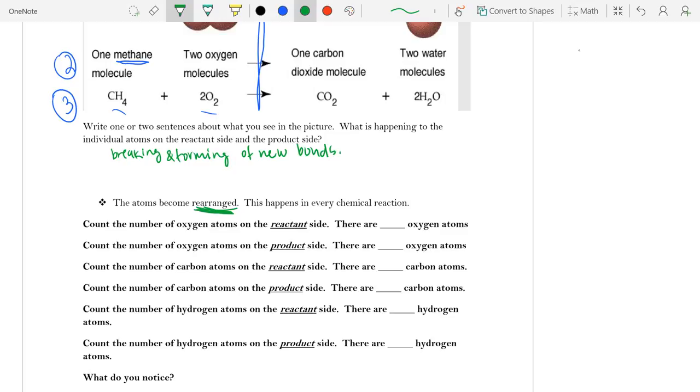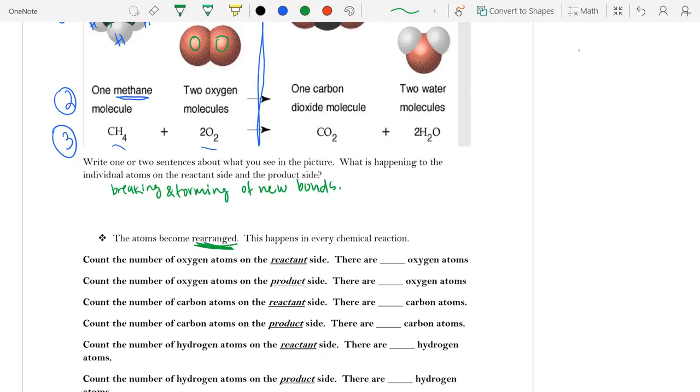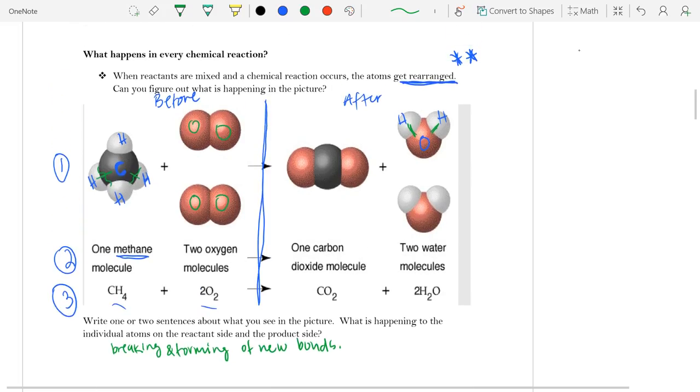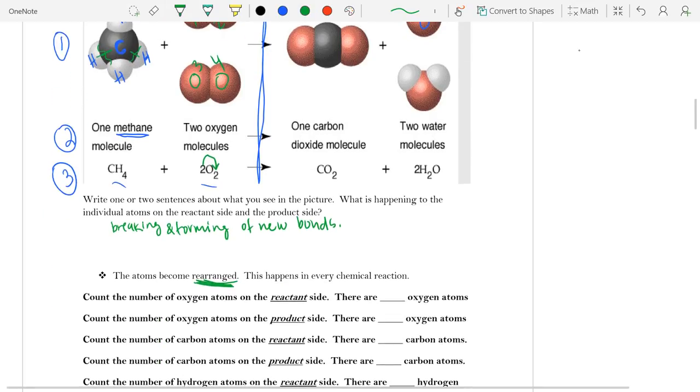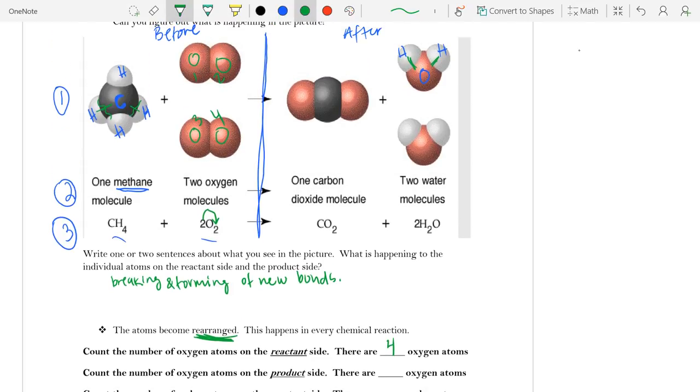So if we want to count the number of oxygen atoms on the reactant side, we want to count, okay, how many do I have on both the reactant side and the product side? I see here that I have one, two, three, four oxygen atoms.